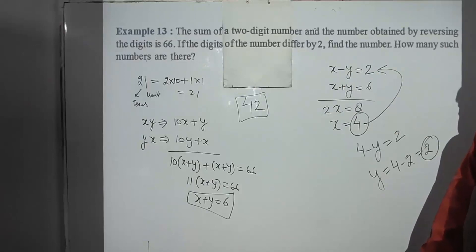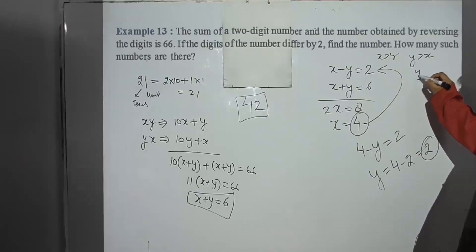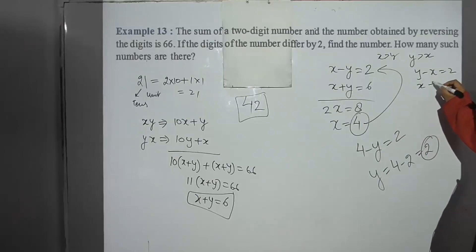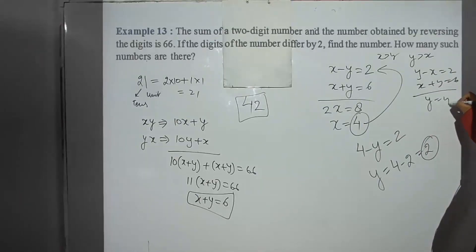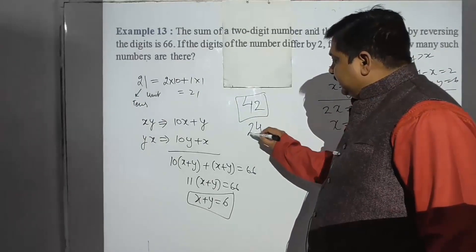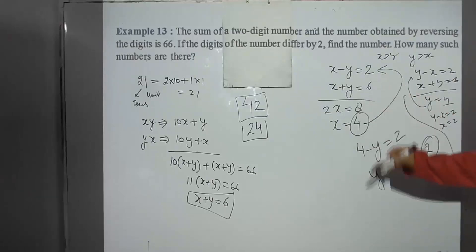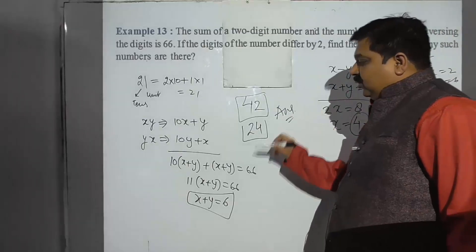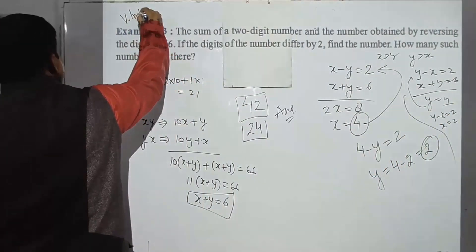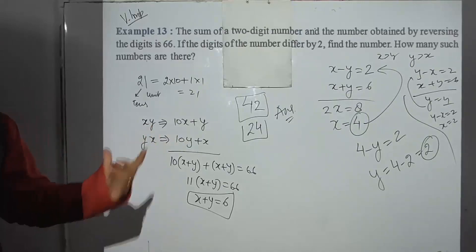But since the problem says 'differ', y could also be greater than x. If y minus x equals 2, combined with x plus y equals 6, we get y equals 4 and x equals 2, giving the number 24. So there are two possible answers: 42 or 24. This is very important for your examination. These are the two such numbers. That concludes example number 13.